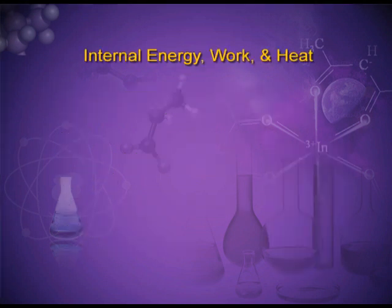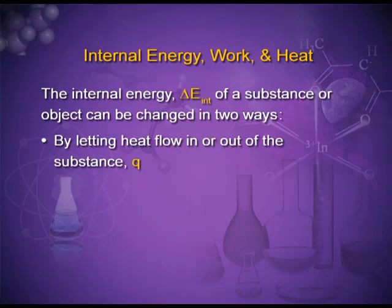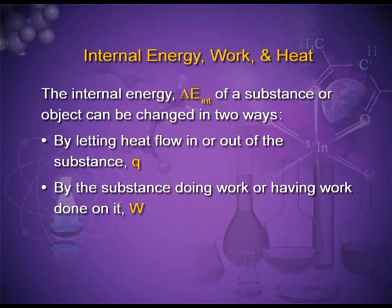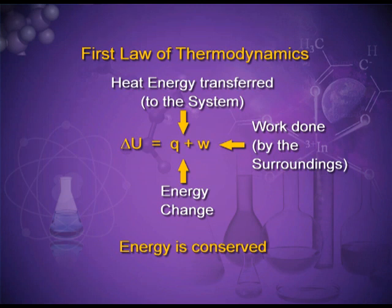Internal energy, work, and heat: The internal energy of a system can be changed in two ways — by doing work on the system or by work done by the system, or if the system absorbs or evolves heat. Q is positive if heat flows into the system, and if work is done on the system, work done is also positive. We must keep in mind the sign conventions while doing numericals. ΔU = Q + W, where Q is the heat exchanged between system and surroundings and W is the work done.